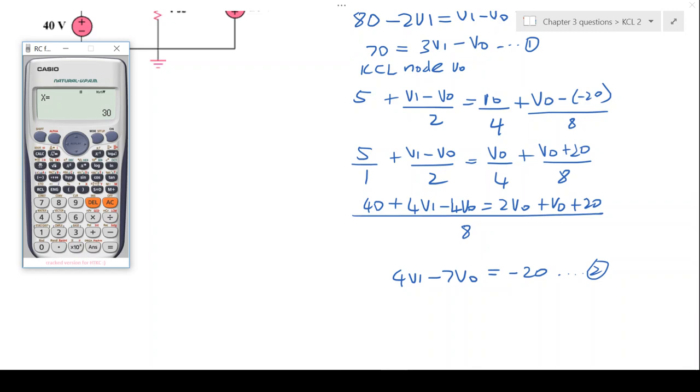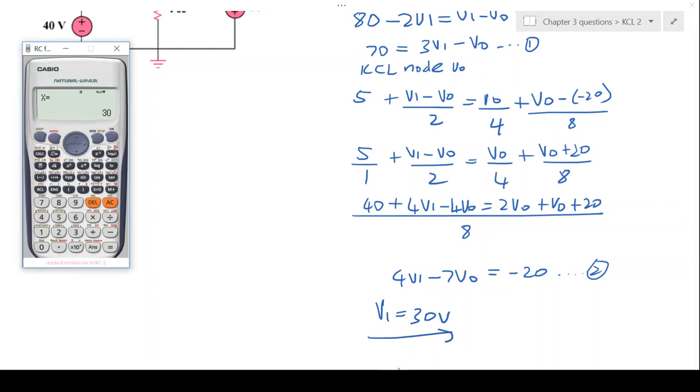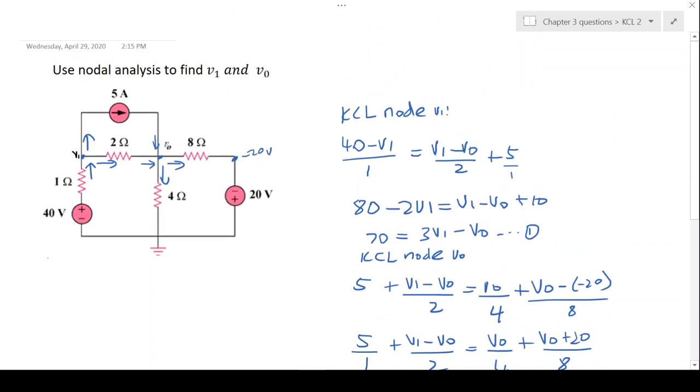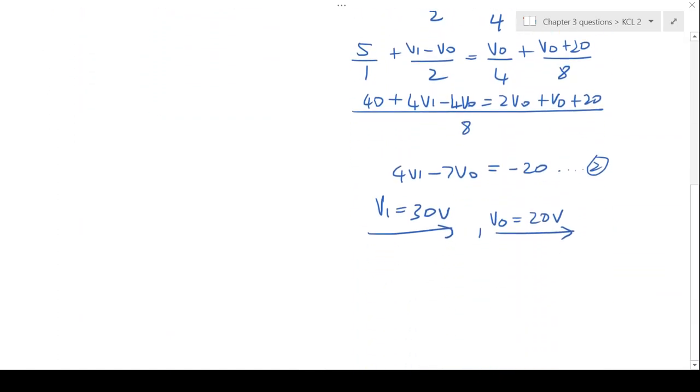And that gives me a value for v1 of 50 volts and a value for v0 of 20 volts. And this is the final voltage for v1 and v0 using nodal analysis. Thank you for watching this video and enjoy the course.